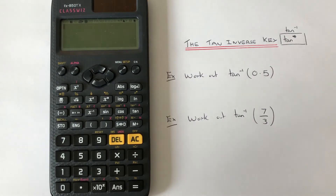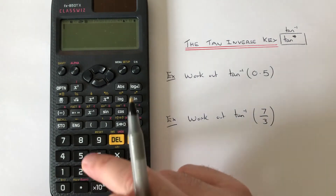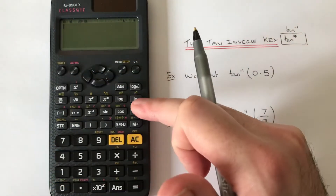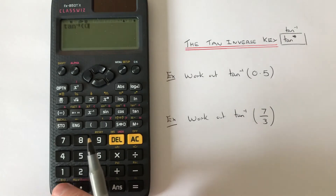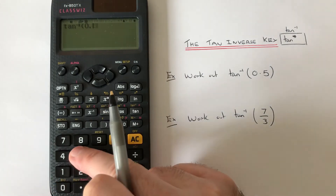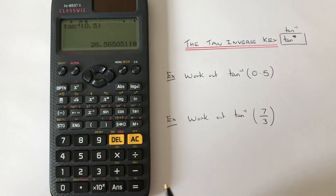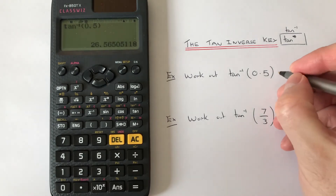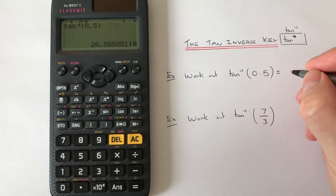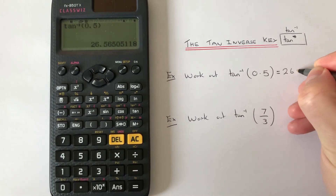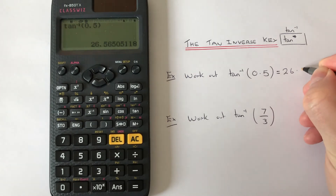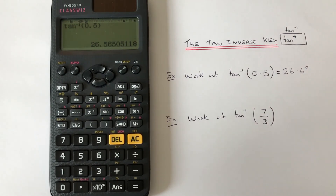The first example is to work out tan inverse of 0.5. So we press Shift, tan, 0.5, close the bracket, and it converts it to an angle for us of 26.6 degrees. Let's look at example two.